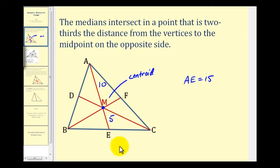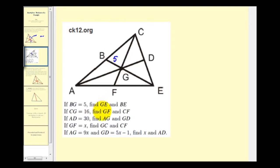All this information is helpful when it comes to solving problems. We're given that BG has a length of five units. We want to determine the length of GE as well as BE. Looking at median EB, we're given the shorter segment that makes up the median. That means the longer segment would be twice the length of the shorter segment, so GE would be ten units. Therefore, median BE would be fifteen units.